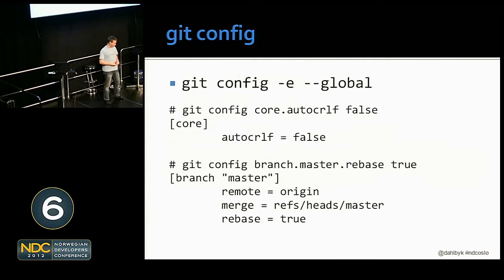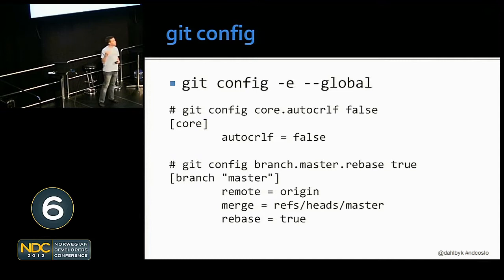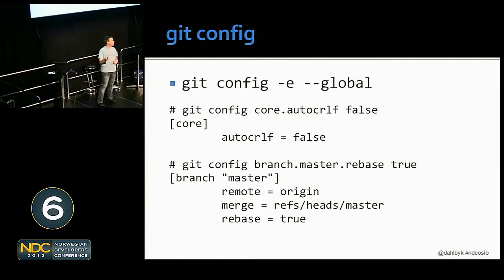`git config -e` will open your config file in your editor — I wish I'd known about this. When you open it up, there are two kinds of configurations. It looks kind of like an INI file: `core` is the top level namespace, then `autocrlf`. If it's a three-value pair, that lives in branch, then the subsection master, and then you've got rebase, remote, merge, and that sort of stuff. This is what a config file looks like.